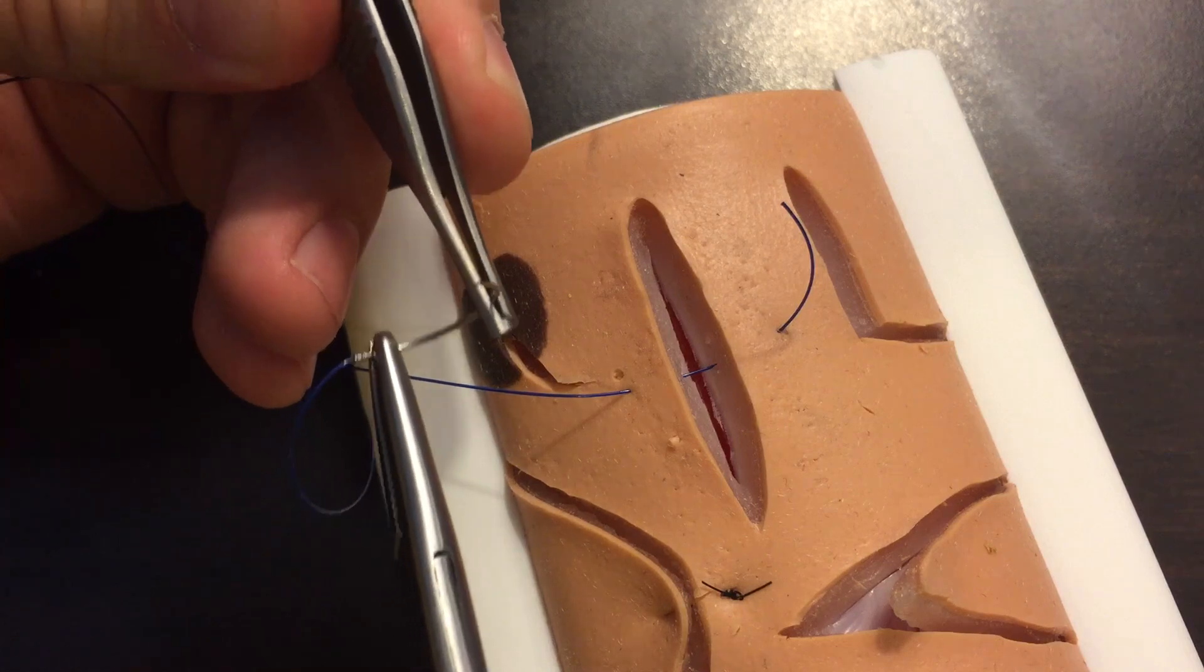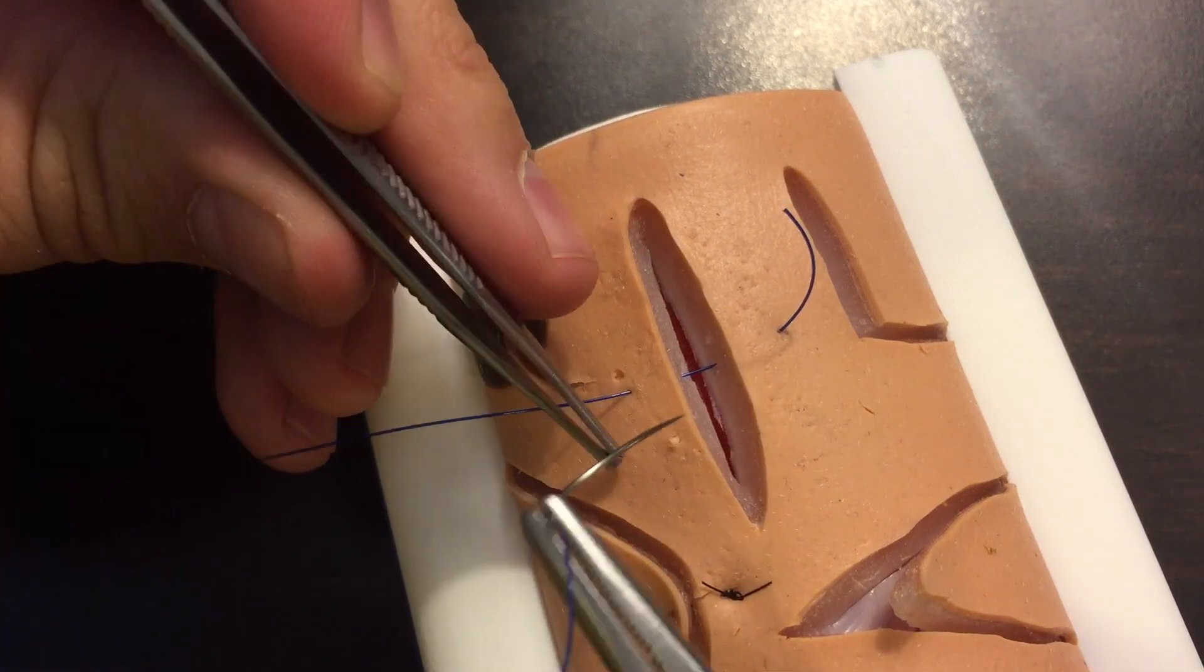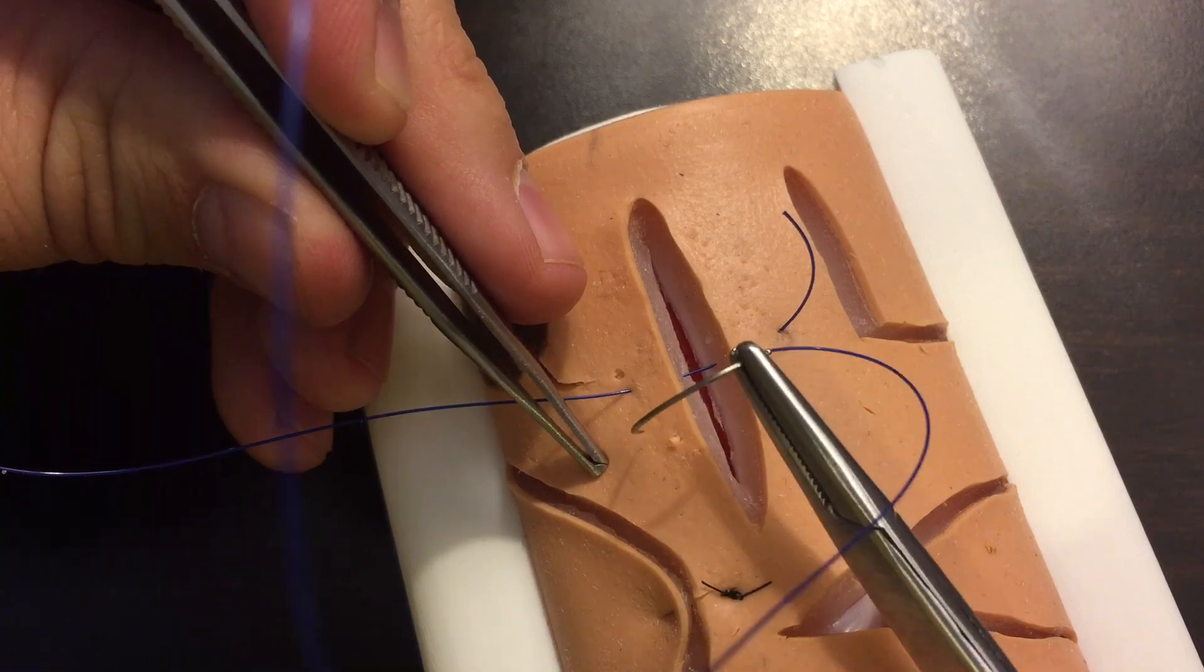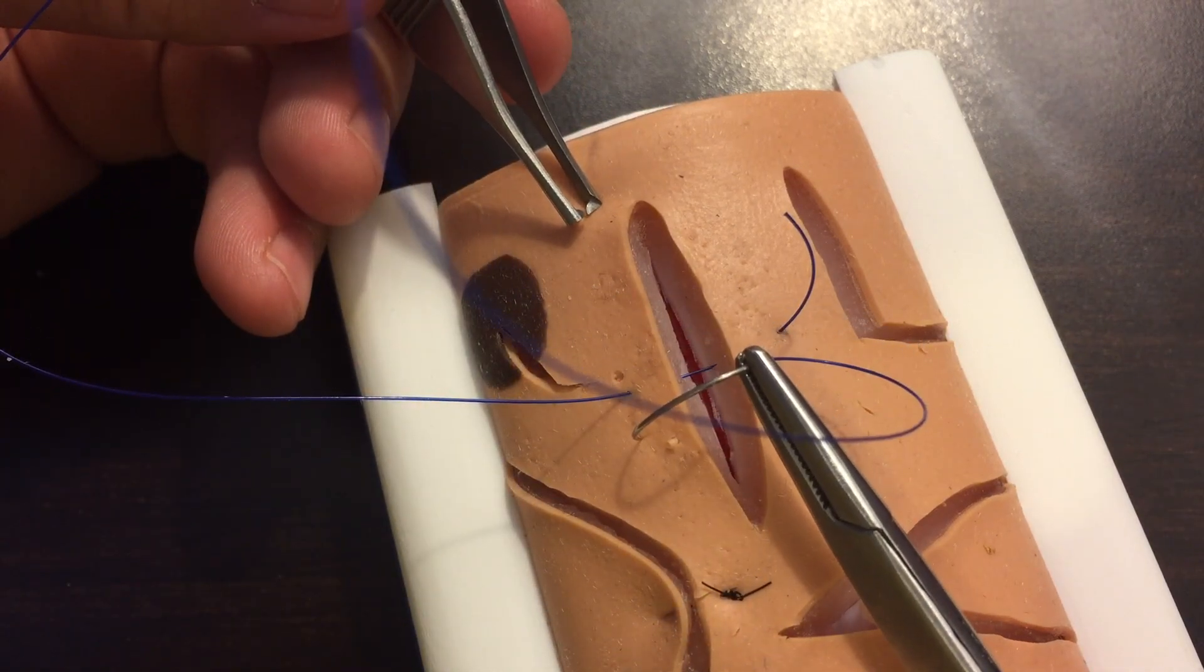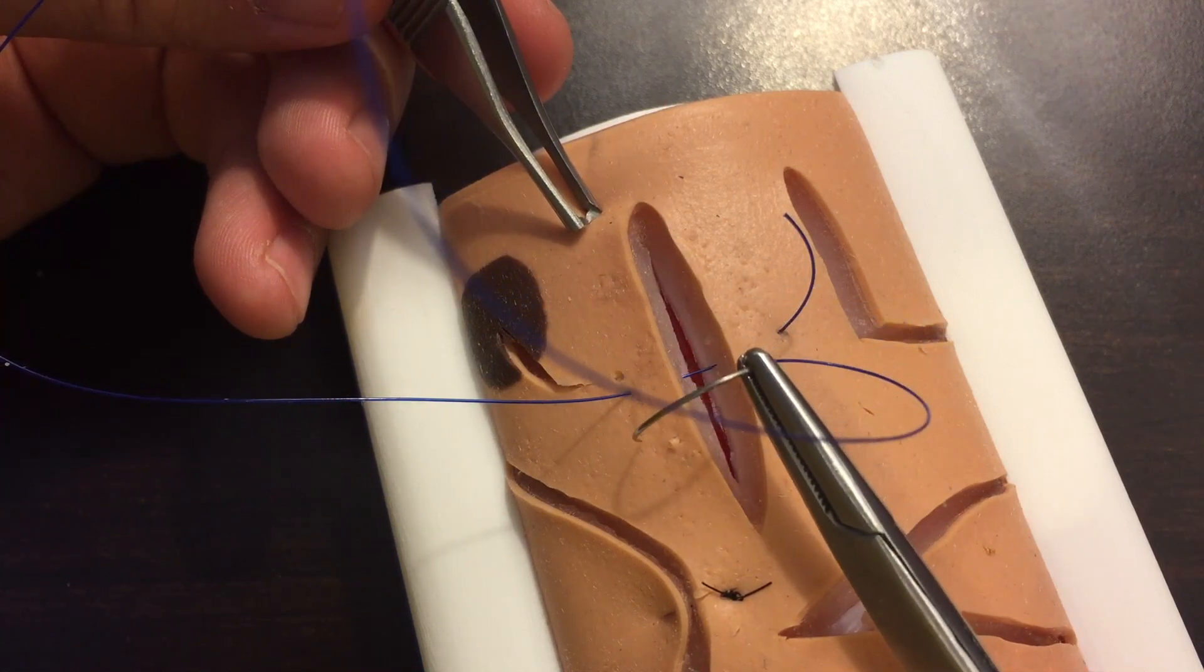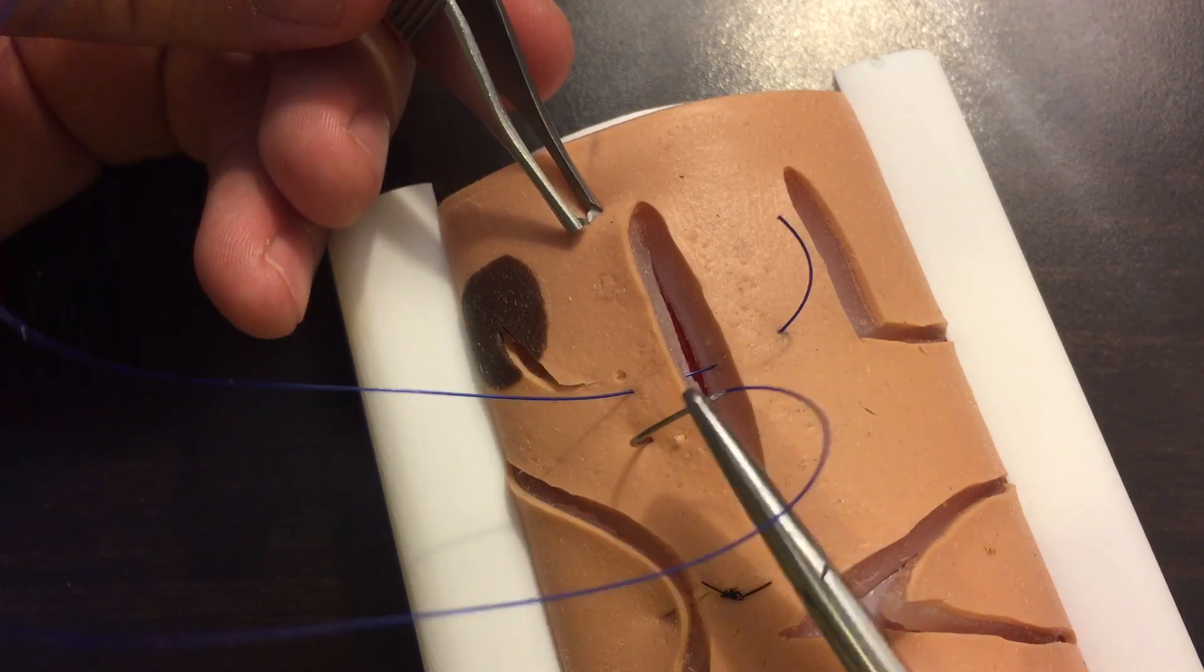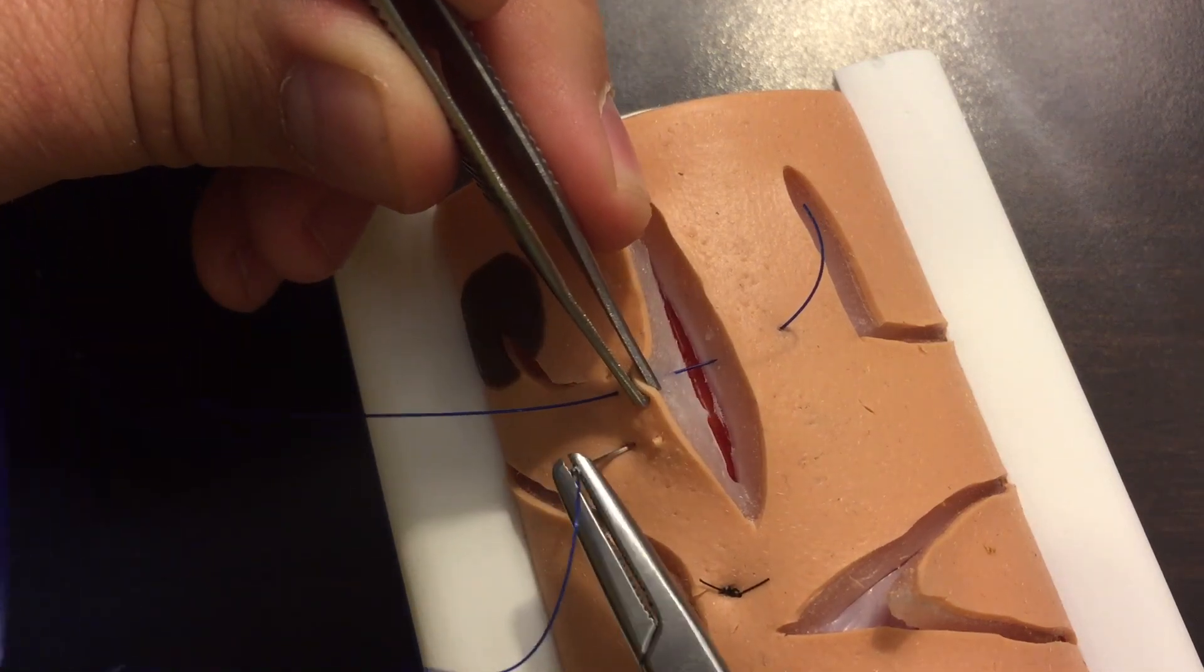I need to take a bigger bite, so you're going to be entering again the skin on this side, but you're going to enter the skin just a little further down on the laceration, the same distance that you exited on the first pass. Equidistant, 90 degrees again.